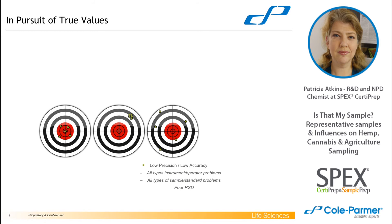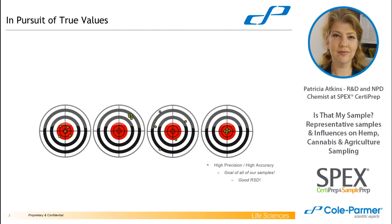Then you have kind of the worst case scenario — low precision and low accuracy. That's where you're looking for five but you're getting one, nine, twelve, seven, six, zero, eleven — bouncing all over the place. This can be an instrument problem, an operator problem, or a sample problem, giving you a very poor relative standard deviation. And then finally you have what you really want: high precision and high accuracy. You're hitting that bullseye target and all of your shots are clustered together. This is the goal of our samples.